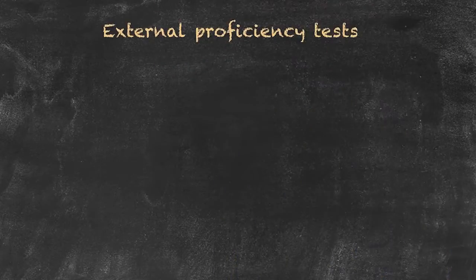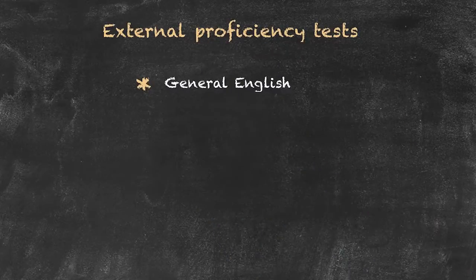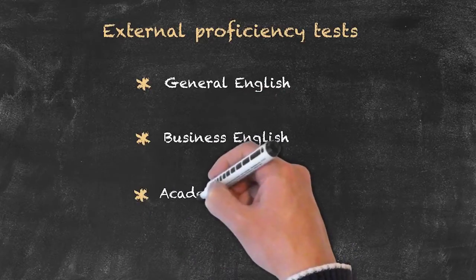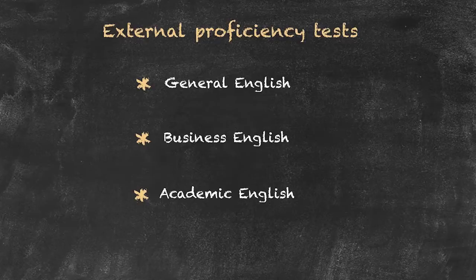Our next category is what are often called external proficiency tests. Within these types of tests, there are three general categories, and we can label those as general English tests, business English tests, and academic. Within these three categories, there are various subcategories of tests, so we'll have a look at each of these in turn now.